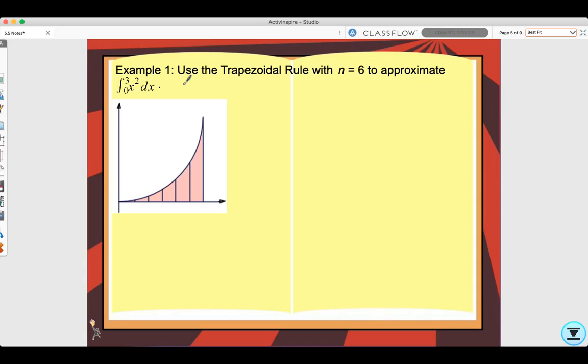Let's look at example one. Use the trapezoidal rule with n = 6 to approximate the integral of x² from 0 to 3. With this one, first we need to find our h so that we can have equal length using our six subintervals. So h would be (3 - 0)/6 which equals 1/2.